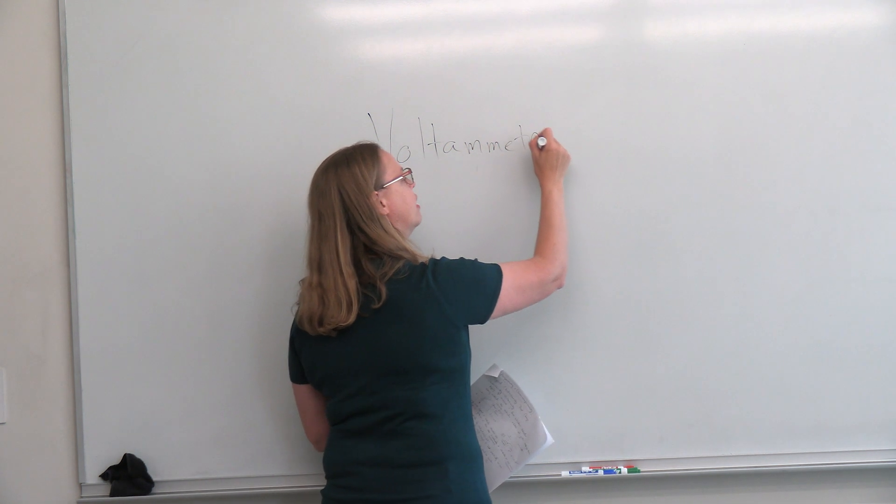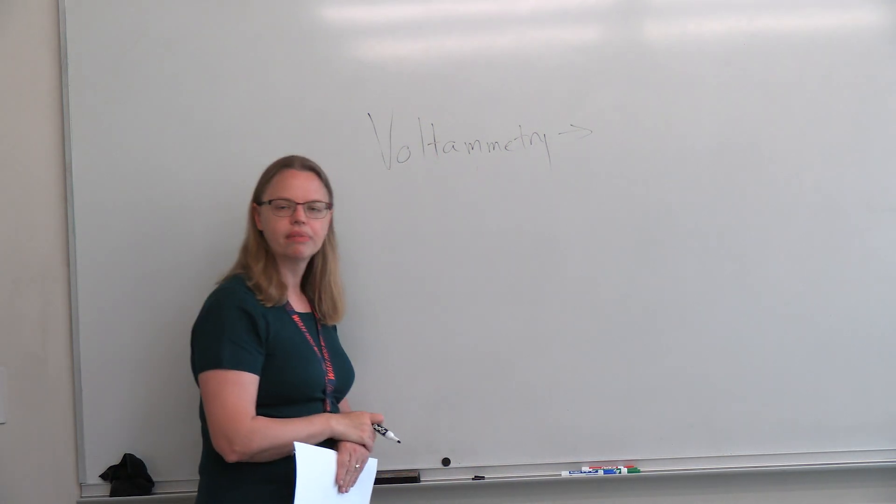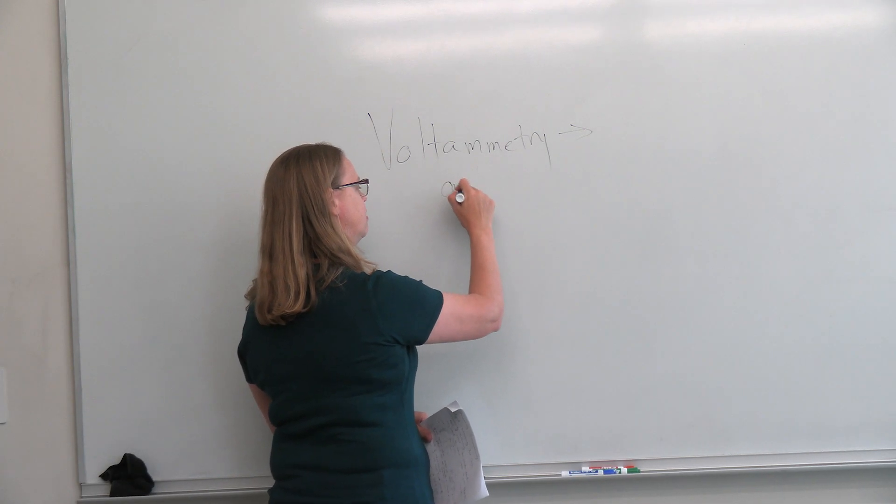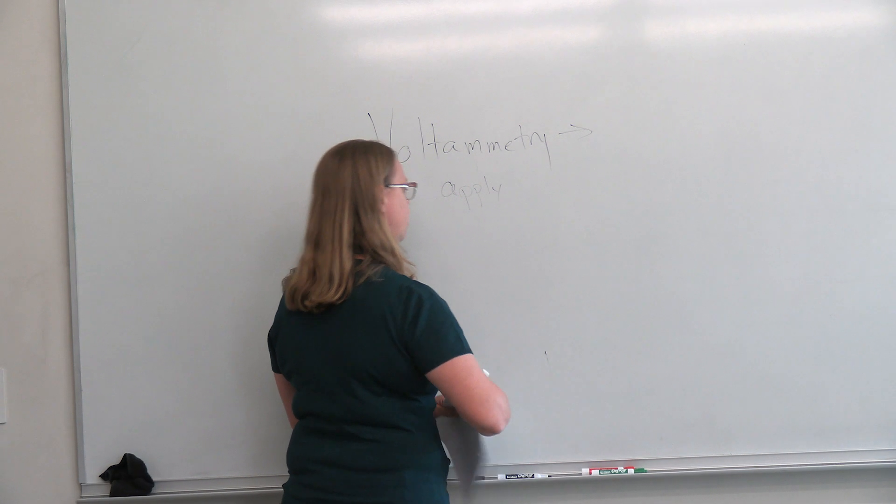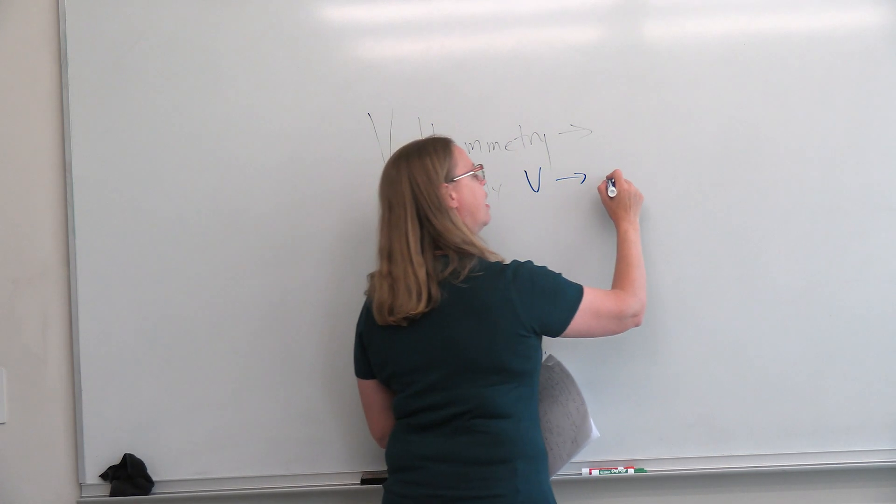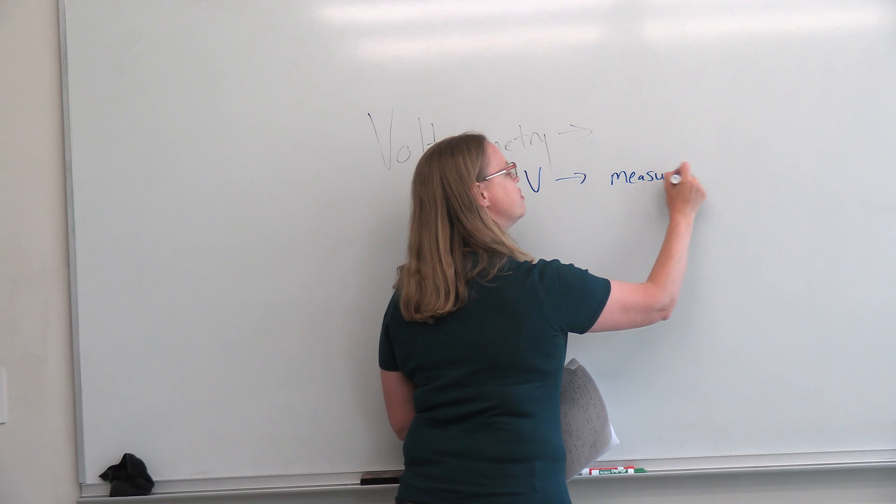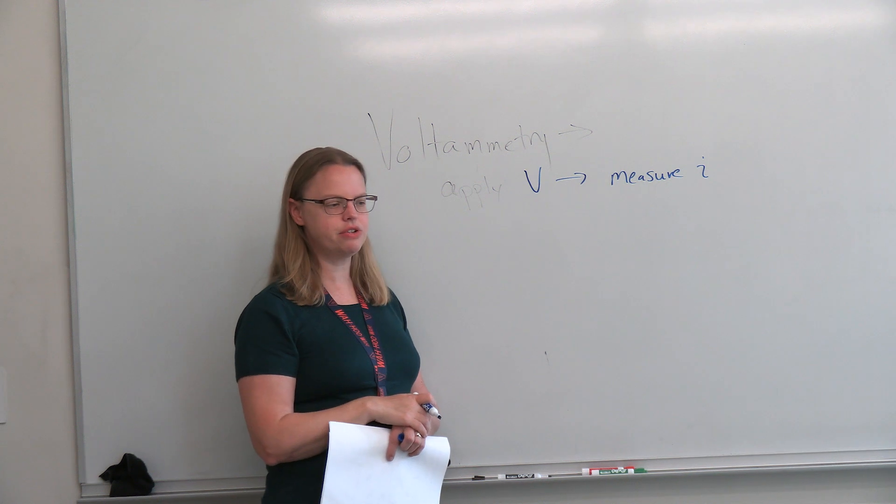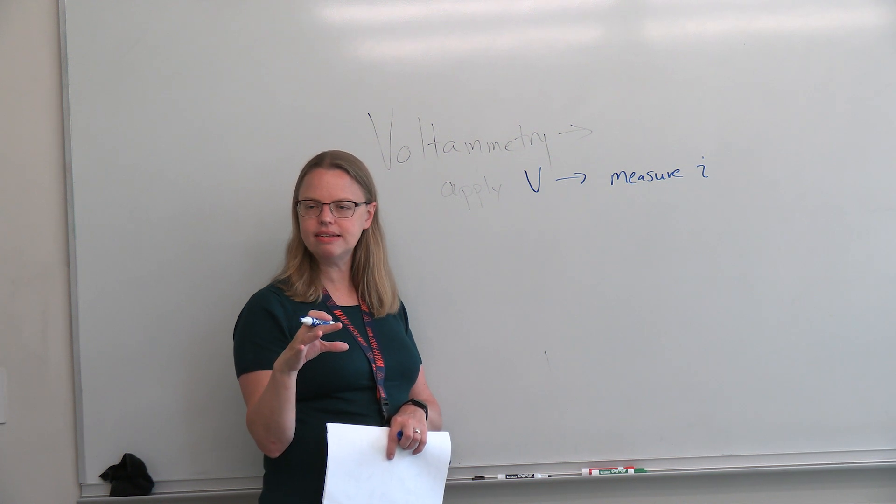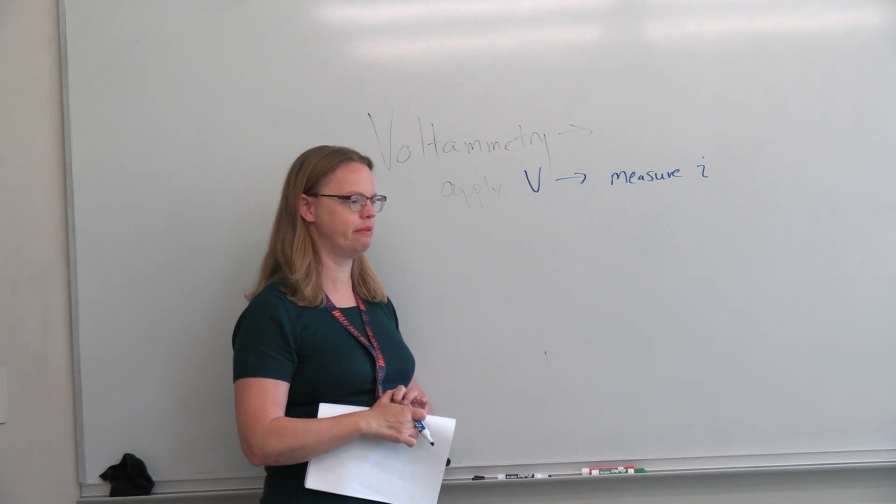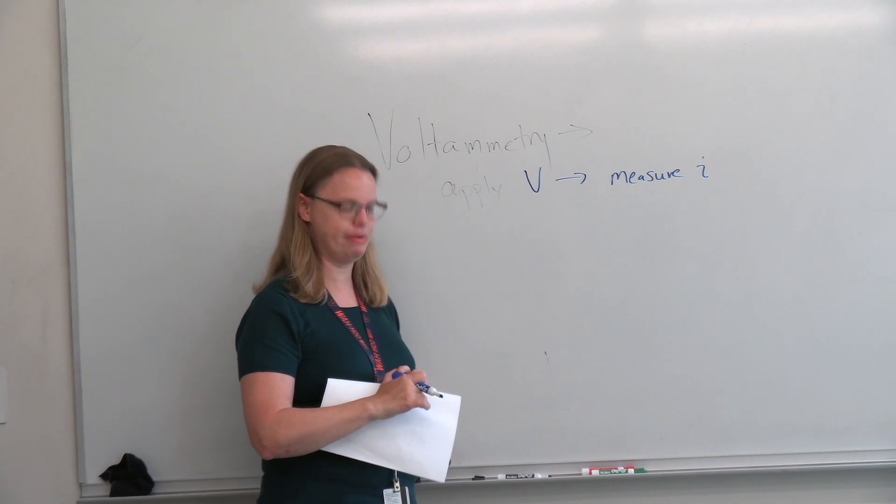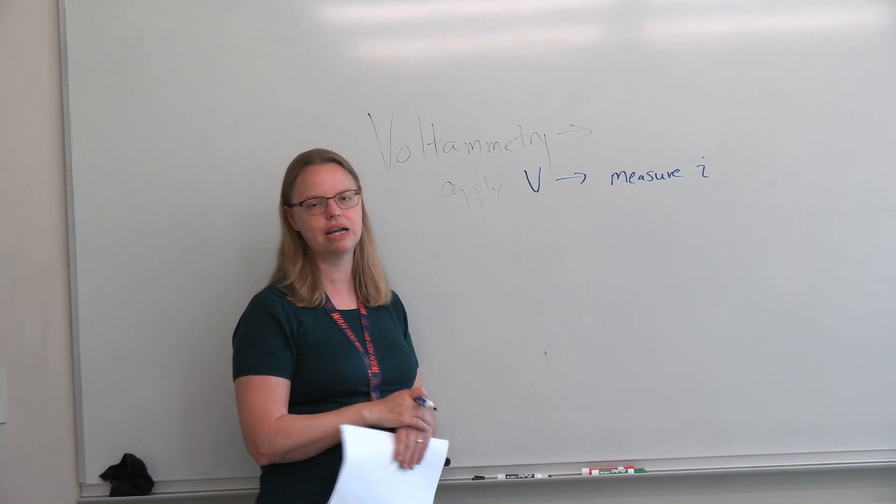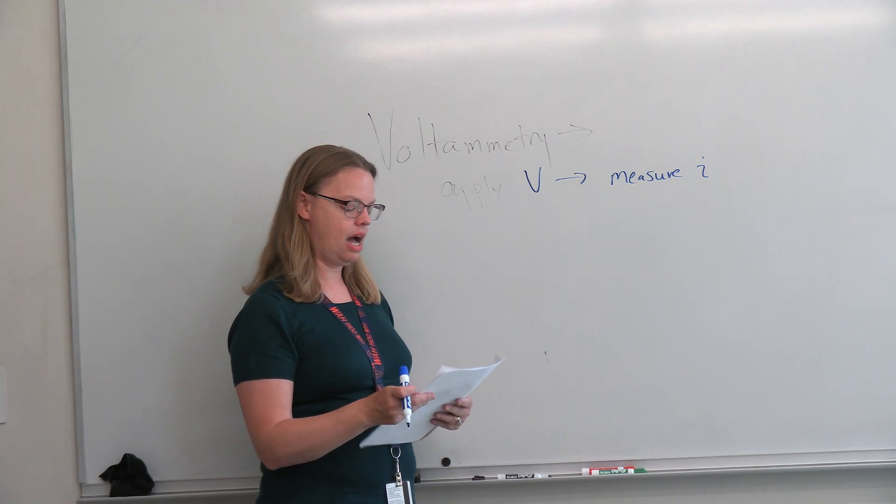The only techniques we're going to talk about for electrochemistry fall under voltammetry. So in voltammetry, we basically apply a voltage and then measure a current. There are bunches of other electrochemistry techniques that exist out there, but in the neuro world, we don't do anything but apply voltage and measure current. So those are all voltammetry techniques. Even amperometry, which I'm going to cover today, is a voltammetry technique.